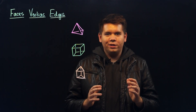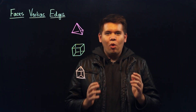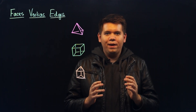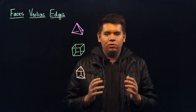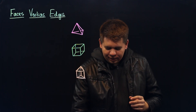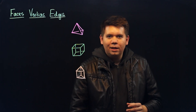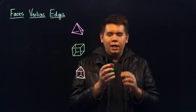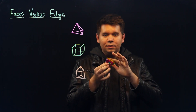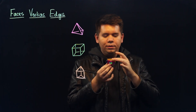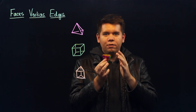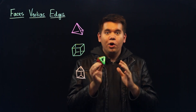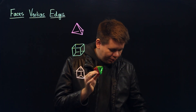The mathematician Euler discovered a wonderful property of convex polyhedra. Take any such polyhedron. It comprises a number of faces, edges, and vertices, or the corners. We can count those.